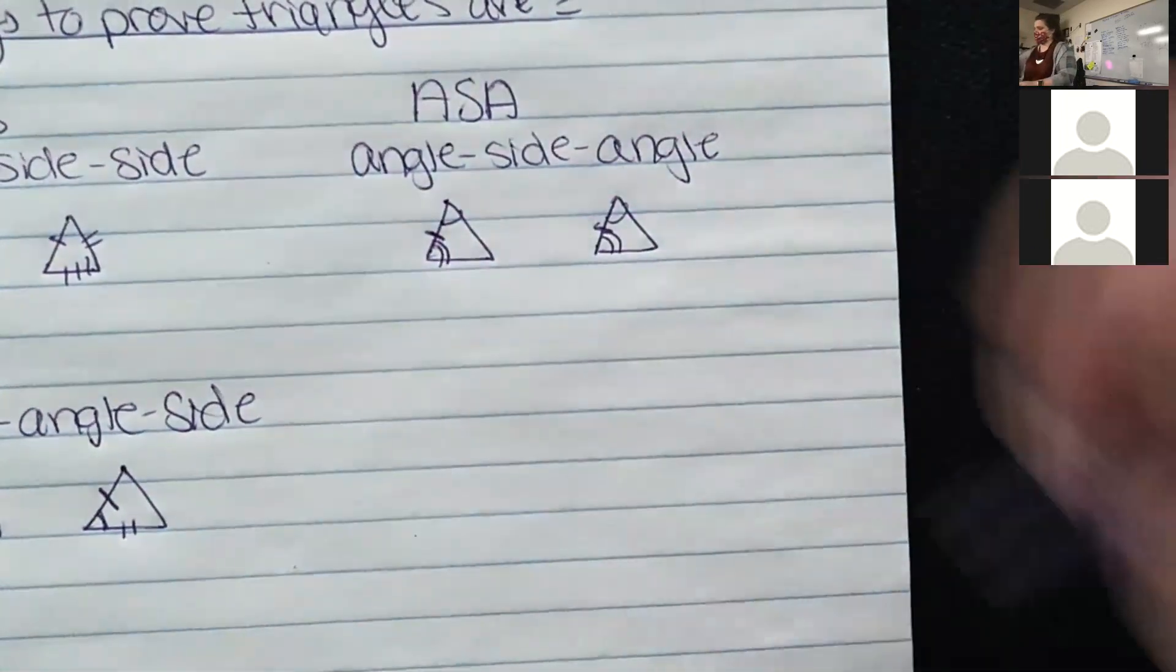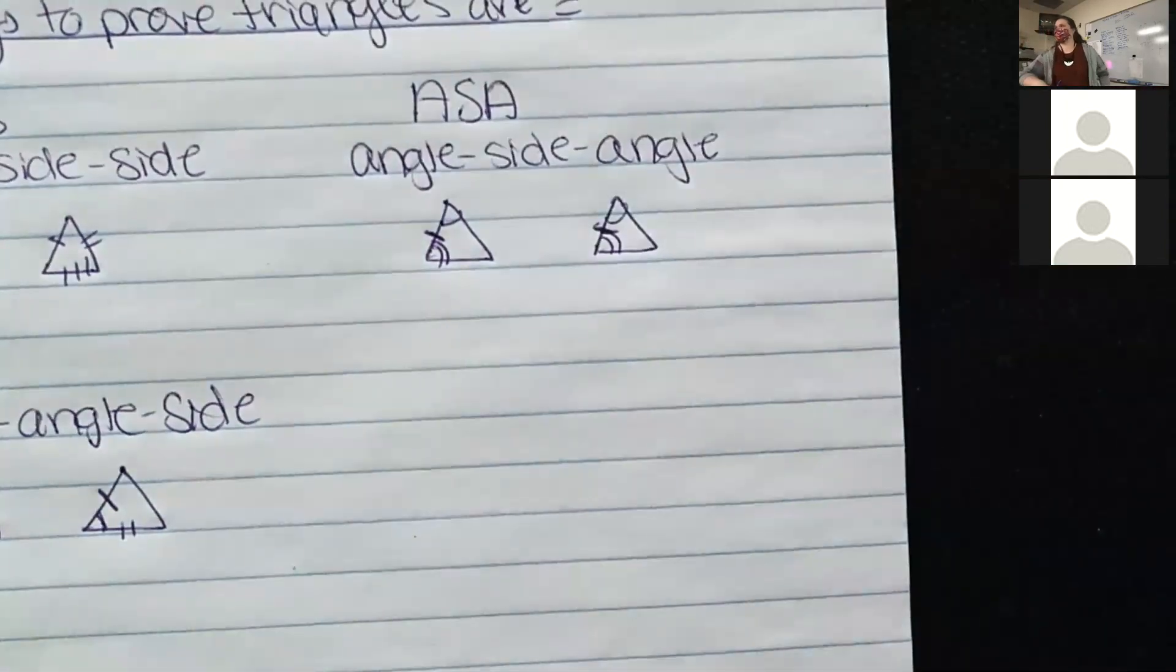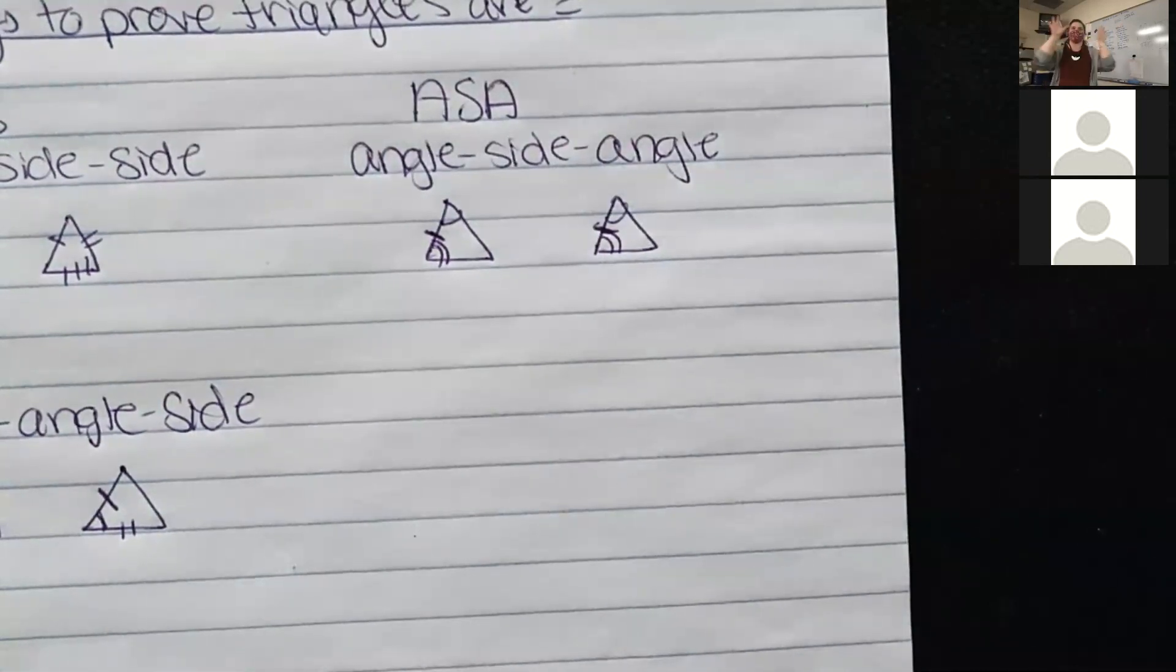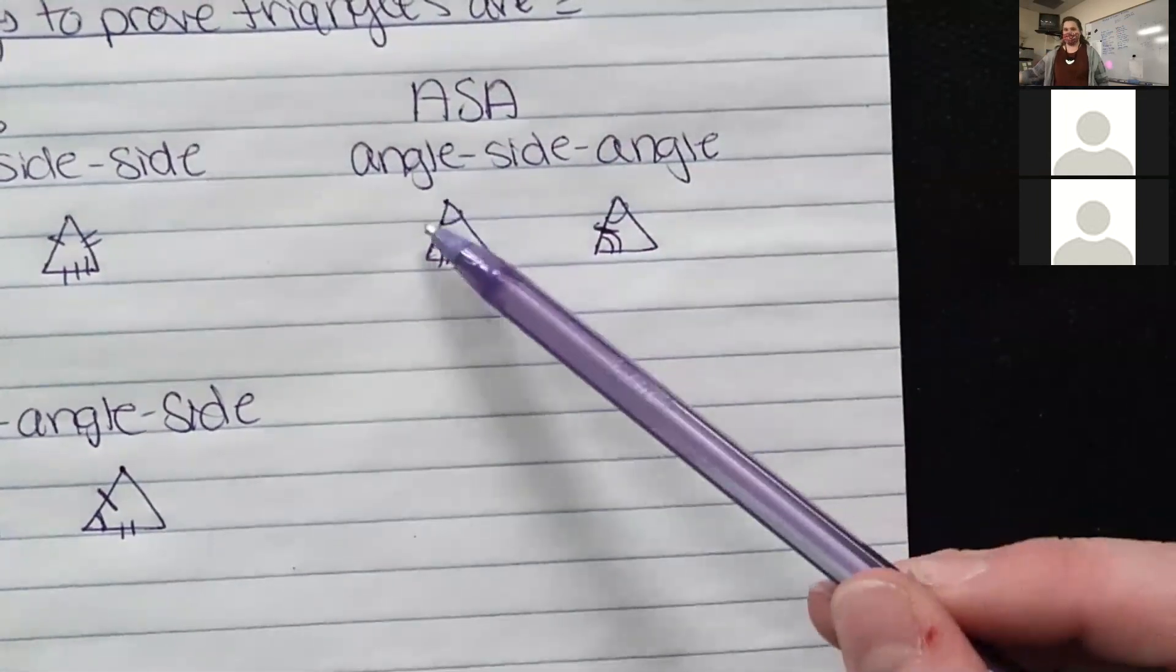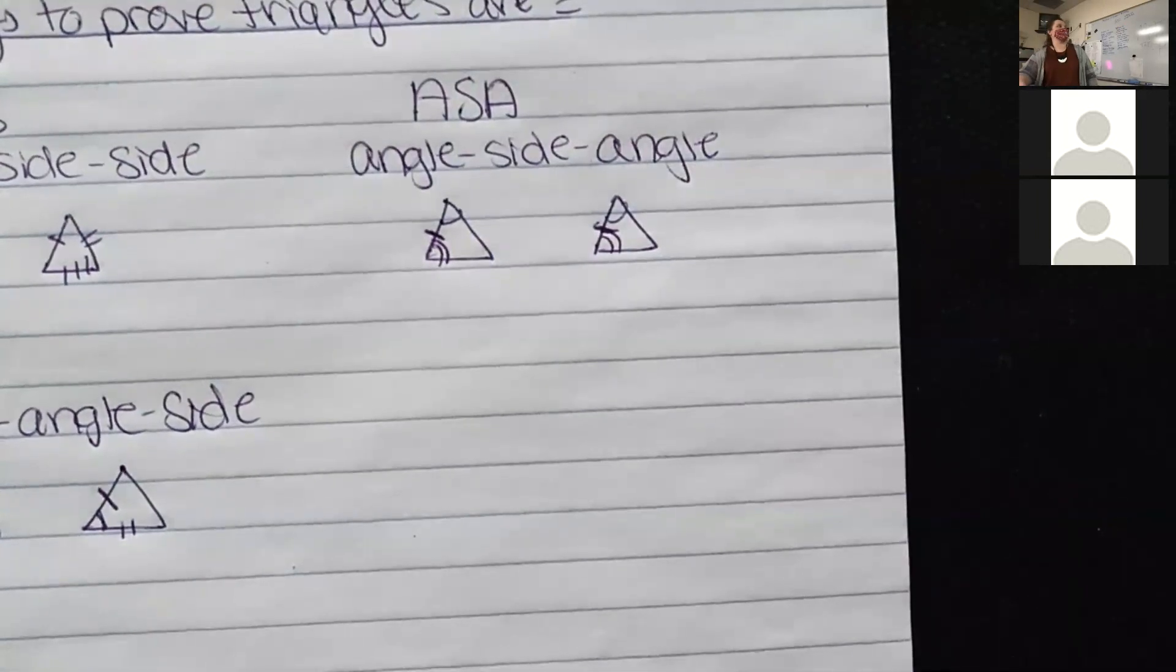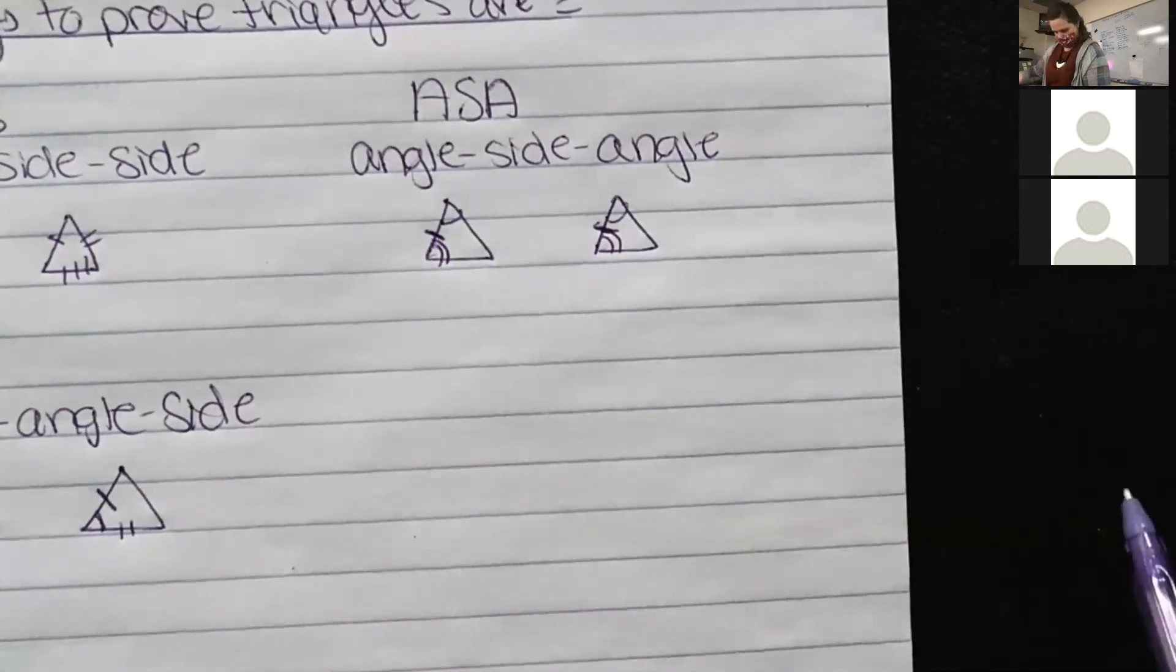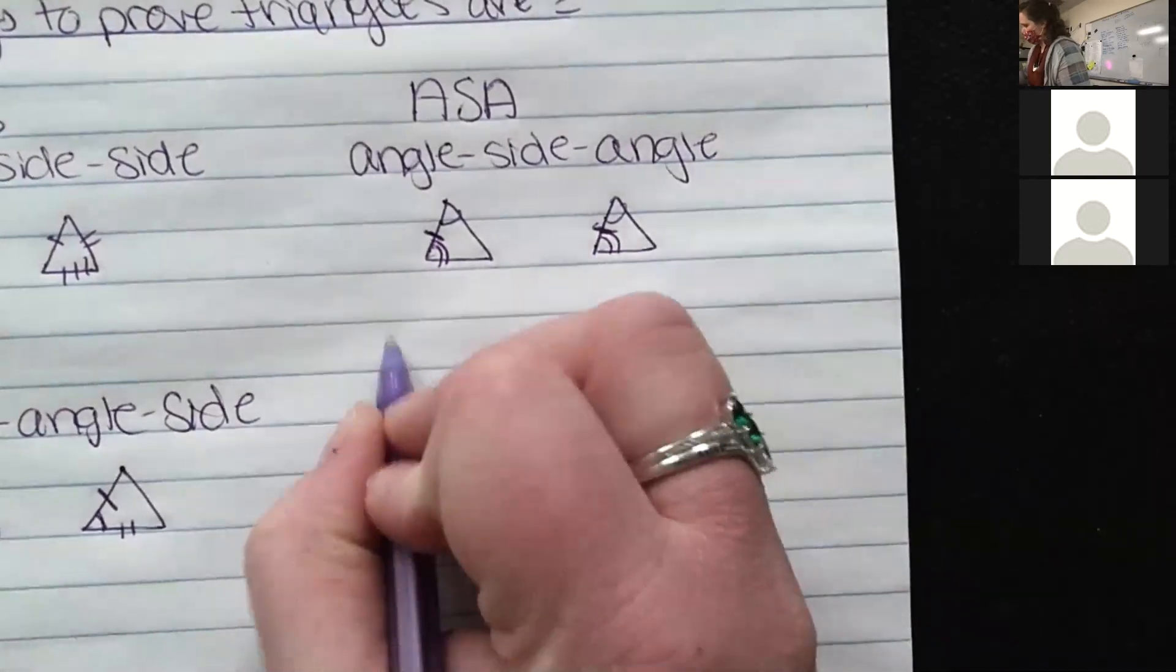So angle and then a side and then another angle. We'll do two slashes on that bottom, two curvy's, two archie's, curvy's. So that side has to be included in between the two angles in order for this to work. Angle-side-angle. I don't know who that is, I'm not letting him in. Next one, angle-angle-side.